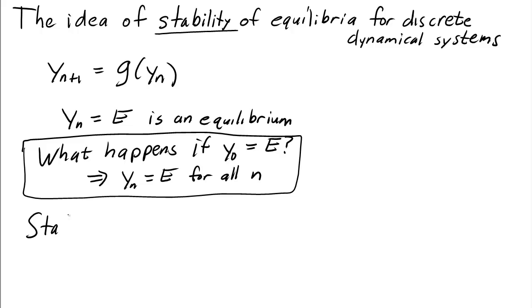The idea of stability is what happens if you start not exactly on the equilibrium but nearby. So what happens if y naught is close to e but is not exactly equal to e?